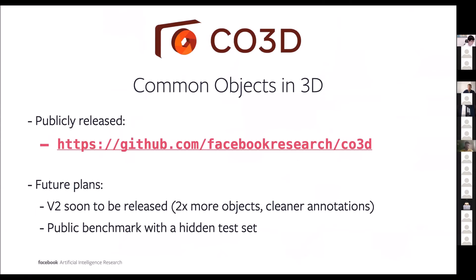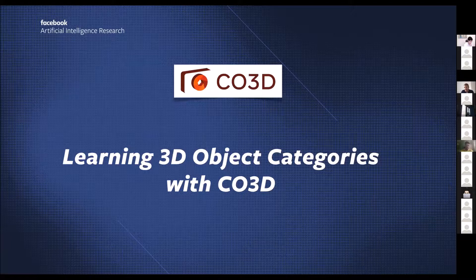We publicly released the dataset about two to three months ago. The best place to visit is the GitHub page on the Facebook Research site, which contains all the necessary hyperlinks to access and download the dataset, plus tooling such as data loaders and evaluation scripts. In the future, we would like to release the next version with roughly two times more objects and cleaner annotations. Furthermore, we would like to release a proper public benchmark allowing researchers to evaluate their methods on a hidden test set, forming a nice leaderboard for novel view synthesis.